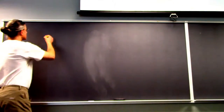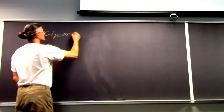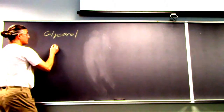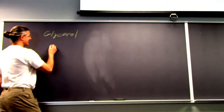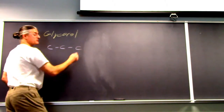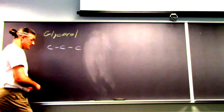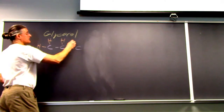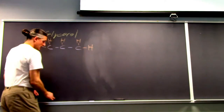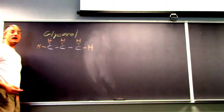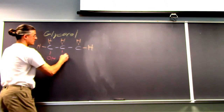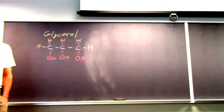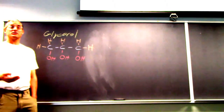There's this molecule called glycerol. Glycerol is a three-carbon molecule, and each of these carbons, because carbon has four bonds around it, is going to have a bunch of hydrogens. It's also going to have hydroxyl groups. So glycerol, basically, is a three-hydroxyl group alcohol.